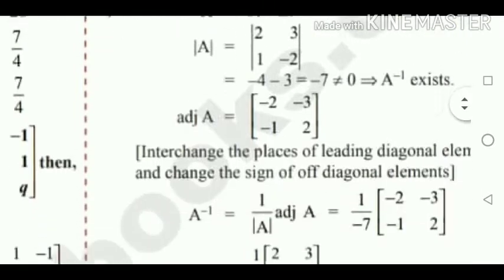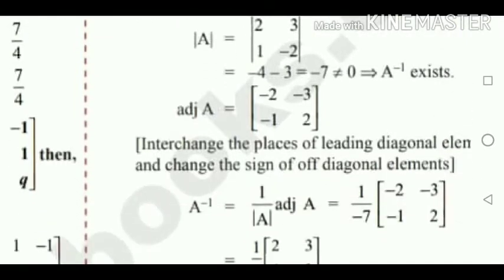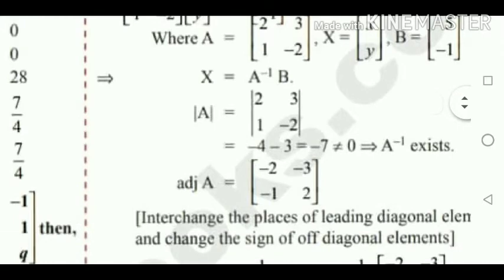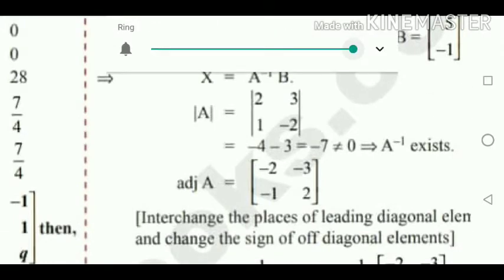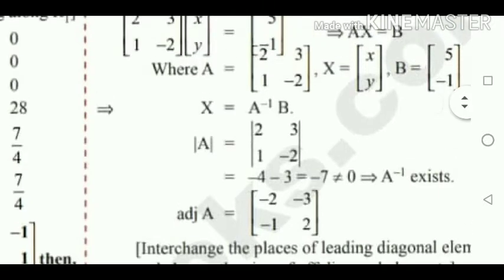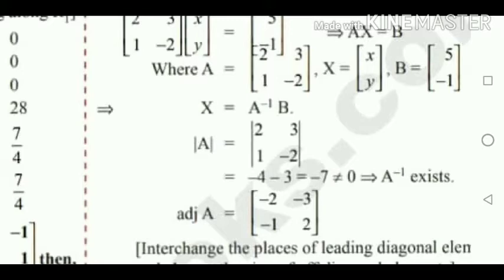Once again: A inverse — first step, find determinant of A. Second step, find adjoint of A. Third step, apply the formula 1 by determinant of A into adjoint of A equals A inverse. Now, finding the determinant of A by cross multiplying the main diagonal and off diagonal: main diagonal is 2 and minus 2, off diagonal is 1 and 3. Multiplying gives minus 4 minus 3 equals minus 7, which is not equal to 0. Therefore A inverse exists.